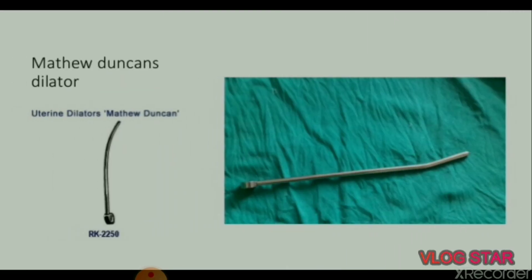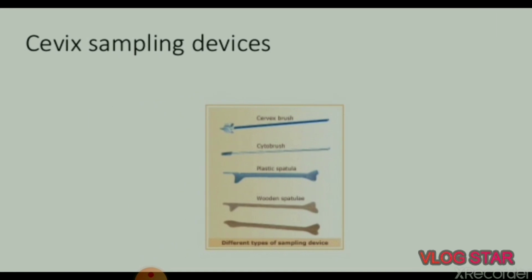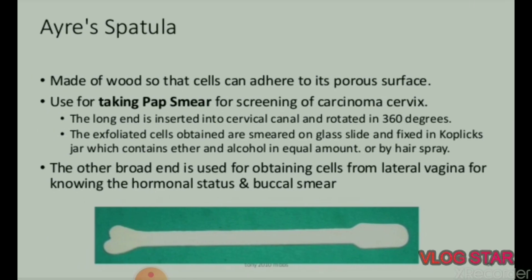Number 8 means an outer diameter of 8 mm. For D&C, dilation up to 8 is done. For MTP, dilation up to 12 may be required. Very large dilation can cause cervical incompetence and perforation. Next instrument is Matthew Duncan dilator.